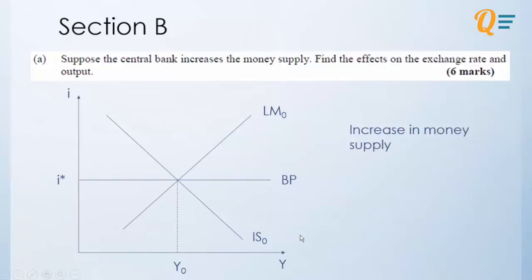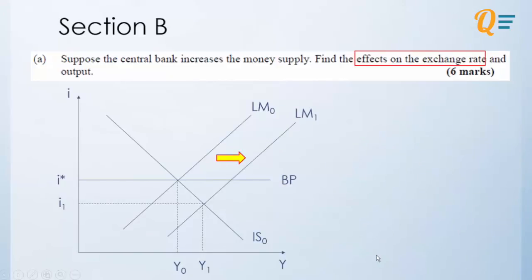So now we are given an increase in money supply, so this should be easy. It is a shift in the LM curve to the right. So as you can see, we shift the LM curve to the right. And now with the interest rates, as you can see from i1, which is lower than our foreign interest rates, what should be the first thing that we see?